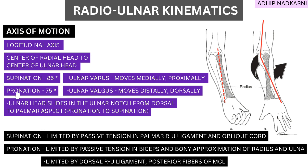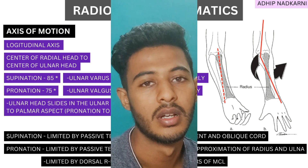During supination there is some ulnar varus and the ulna moves medially and proximally, whereas in pronation there is ulnar valgus and it moves distally and dorsally. During pronation, with valgus, the medial angle increases — you can see the ulna goes in that direction. During supination the ulna which had gone inside comes out comparatively, which is the varus. So that is the varus and valgus seen in supination and pronation at the ulna.